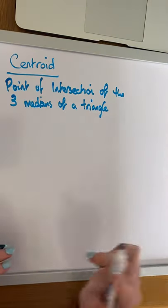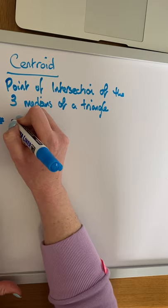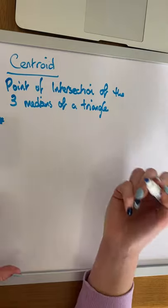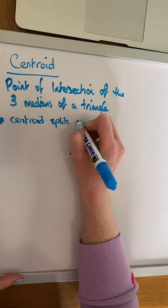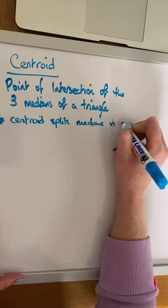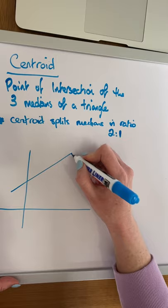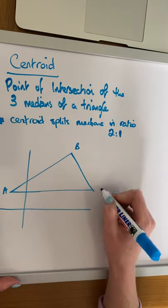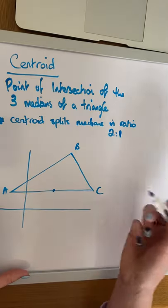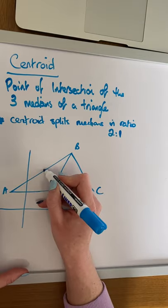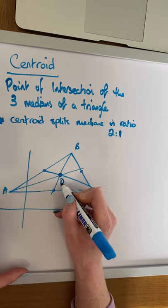Remember, a median is a line connecting the vertex to the midpoint of the opposite side. An interesting thing to note about the centroid is that it bisects the medians in a ratio of two to one. Looking at a triangle ABC: the midpoint of AC gives median one, the midpoint of AB connected to C, and the midpoint of BC connected to A. The point where they meet, let's call it D, is the centroid.